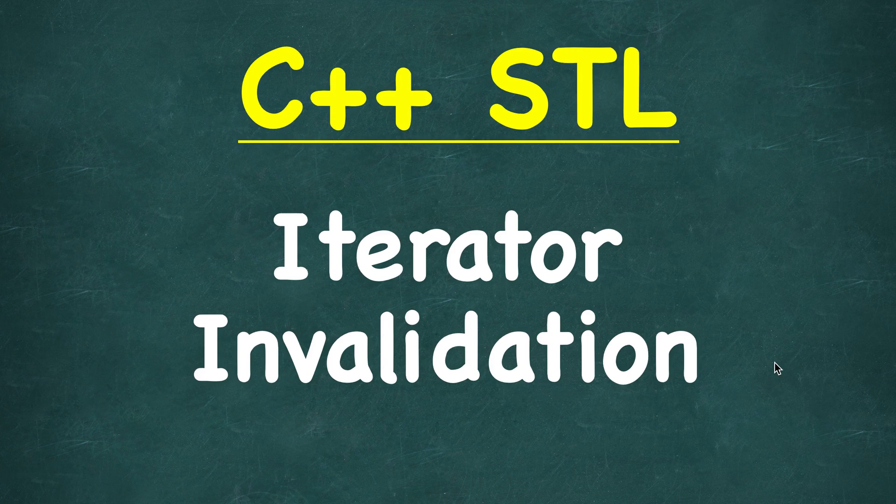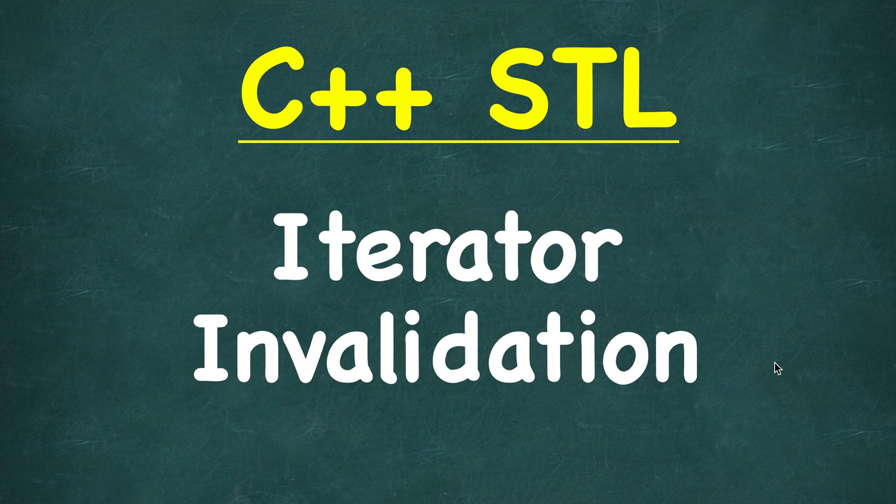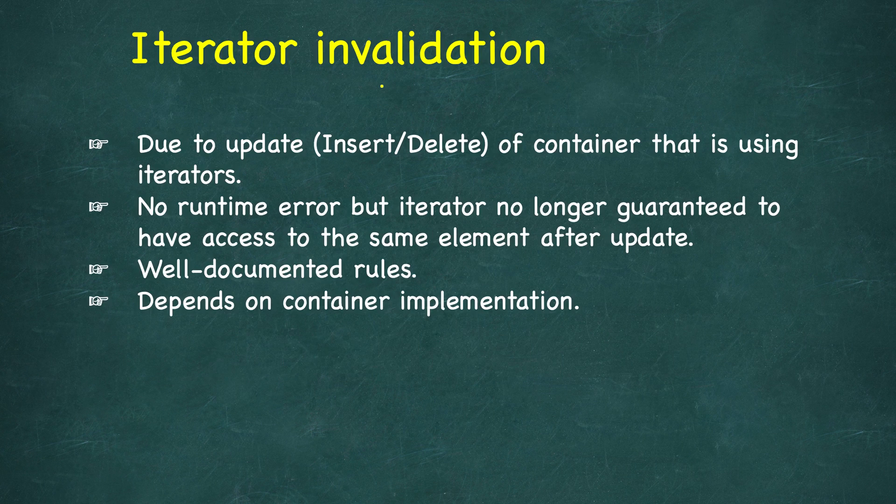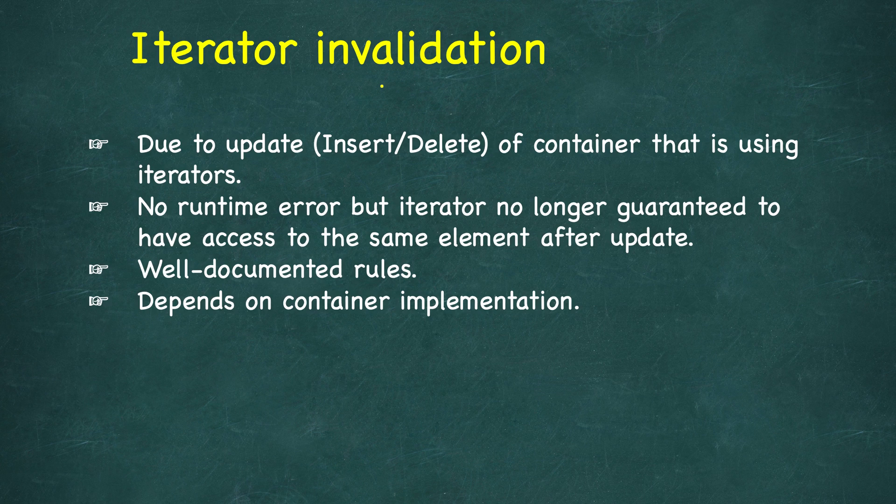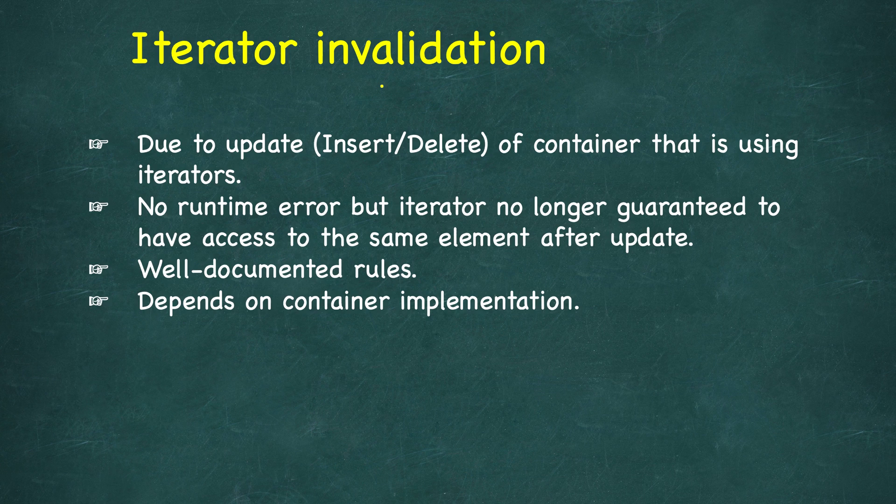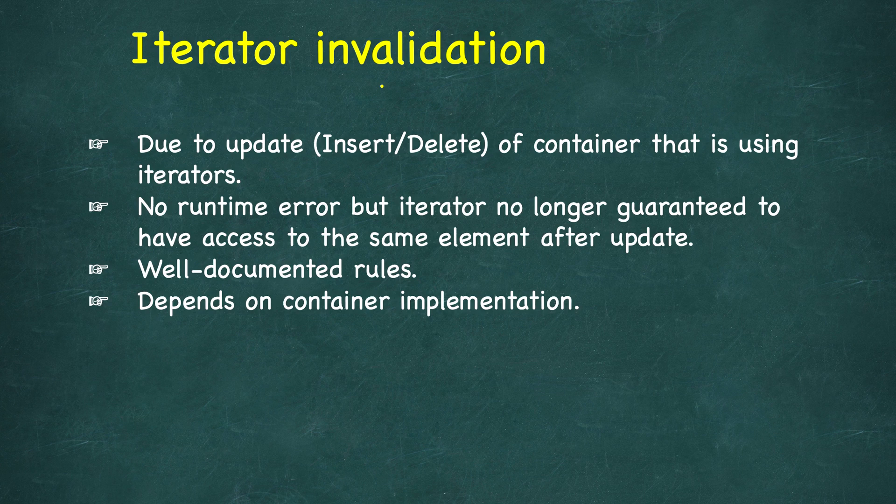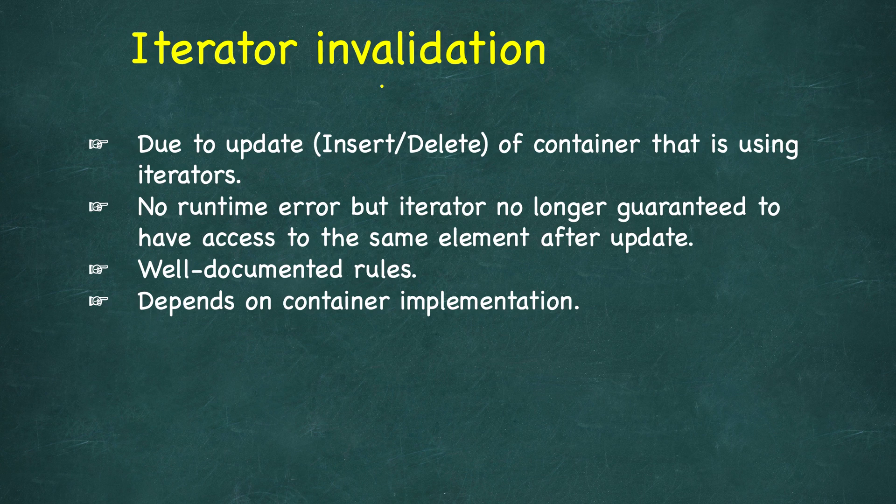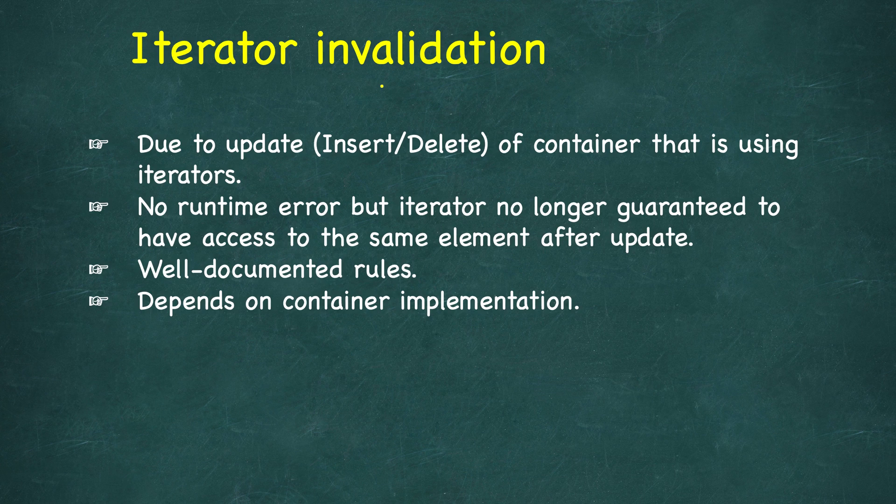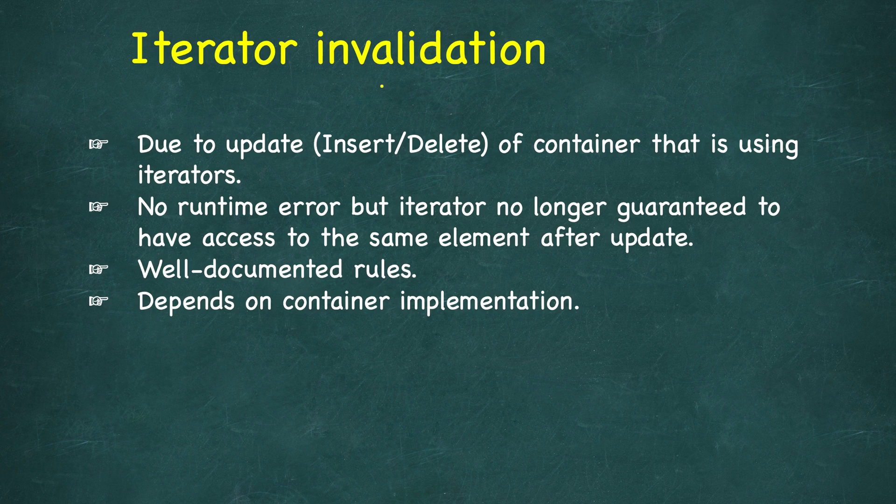In this lesson we will study iterator invalidation and the different rules of iterator invalidation. So first, let's understand what is iterator invalidation. When there are changes in the content of the container, by changes we mean when we insert or delete some elements to the container, and that container is currently using iterators, then these iterators may become invalidated. They may or may not, depending on the container implementation. They will not cause runtime error, but the iterator is no longer guaranteed to access the same element it was referring to before the update happened.